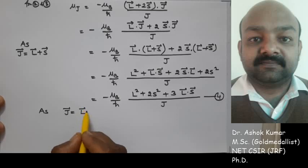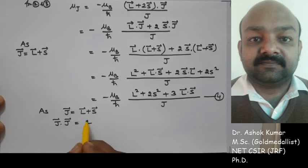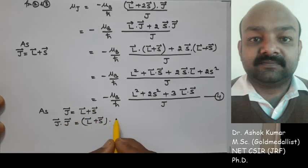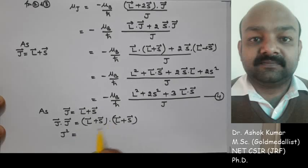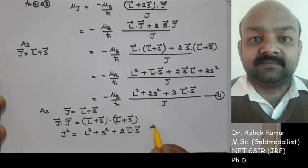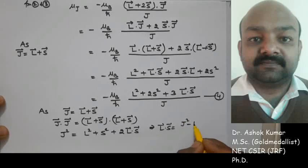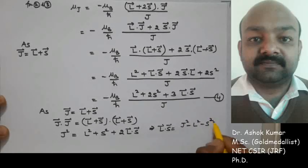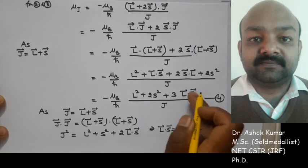Now we find the value of L·S. Since J = L + S, taking the dot product of both sides with itself gives J² = L² + S² + 2(L·S). This implies L·S = (J² − L² − S²) / 2. We substitute this value to calculate μ_J.